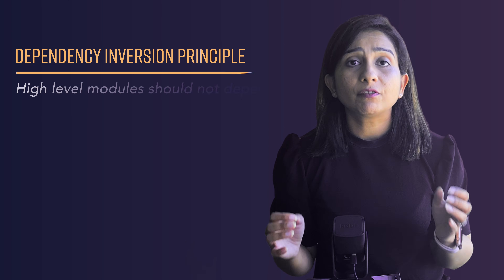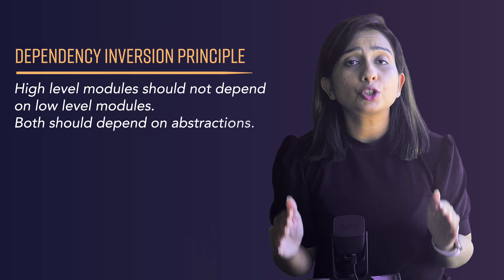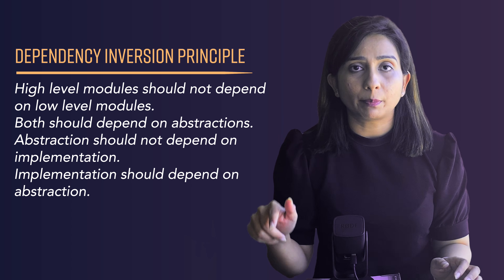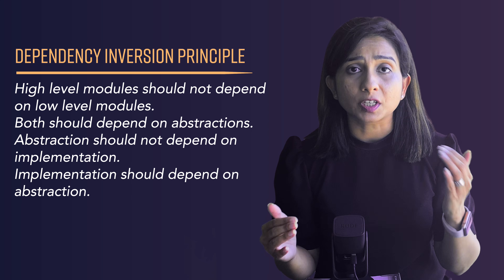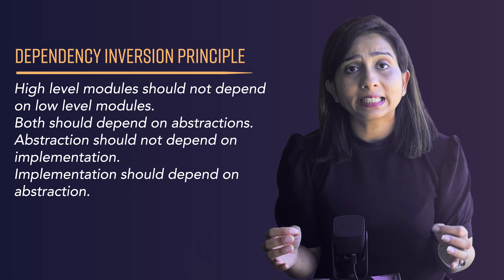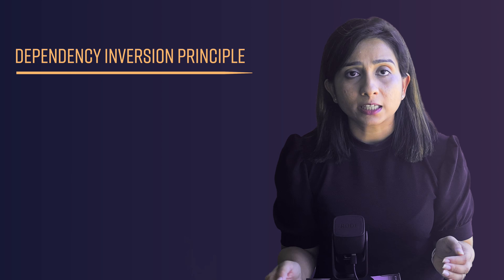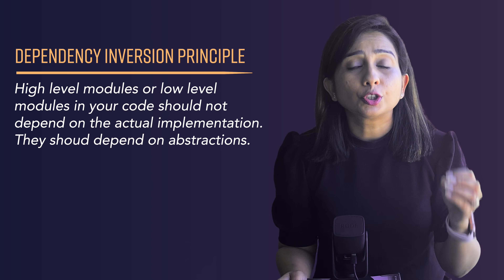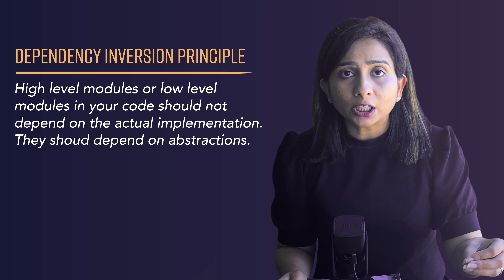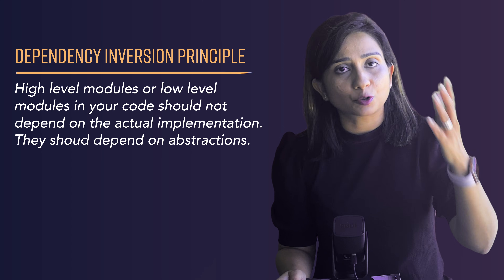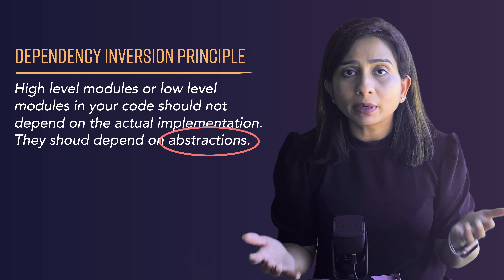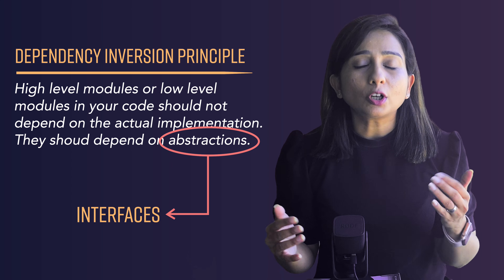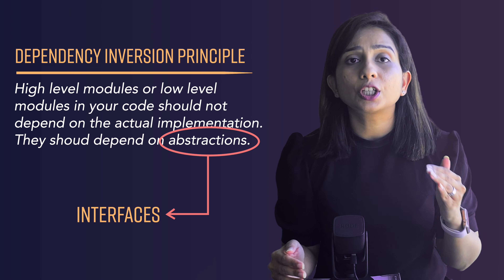The principle itself says: high-level modules should not depend on low-level modules; both should depend on abstractions. This does not make sense on the first, second, or third read. In simpler terms, this principle says that high-level modules and low-level modules in your code base should not depend on the actual implementation or concrete classes — they should depend on abstractions. Abstractions are implemented using interfaces, so different client or caller classes should not know about the internal implementation. Instead, they should depend on interfaces.